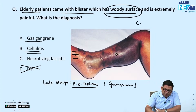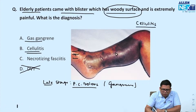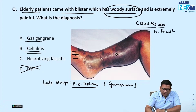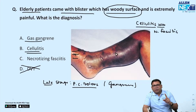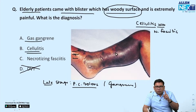Clinically, since complete information is not provided, cellulitis is a far better option than necrotizing fasciitis. Necrotizing fasciitis starts with the deeper layer and there will be pus.